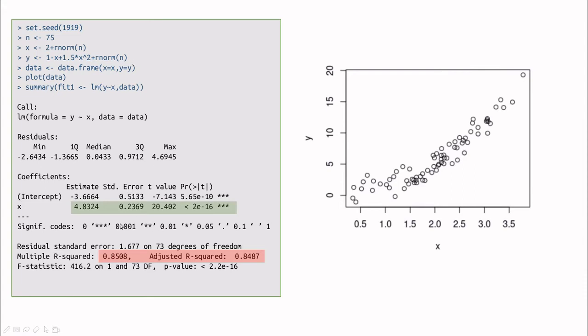You can see, because we know the data, that there is something missing here, because the residual standard error is 1.7, and the noise that we have introduced with this function is 1. So when you call this R-norm you're generating a Gaussian distribution with 1 standard deviation. So basically we are overestimating the noise, and this is because we are not doing the proper regression.